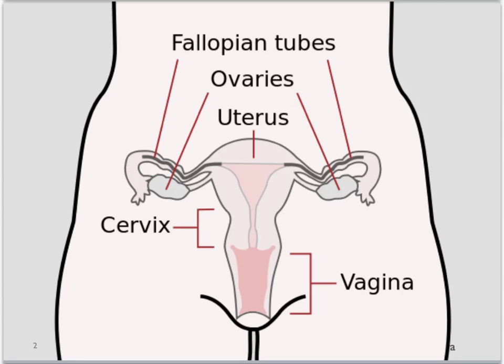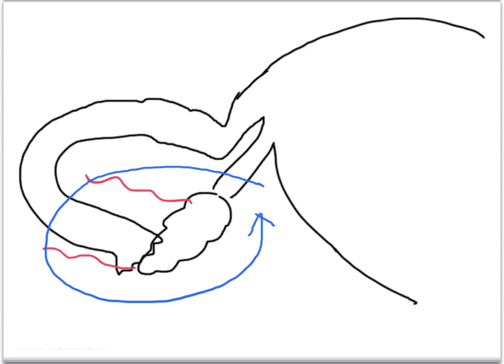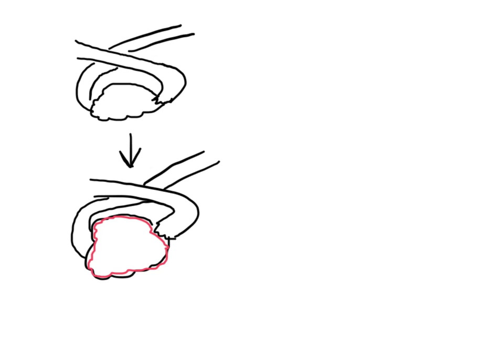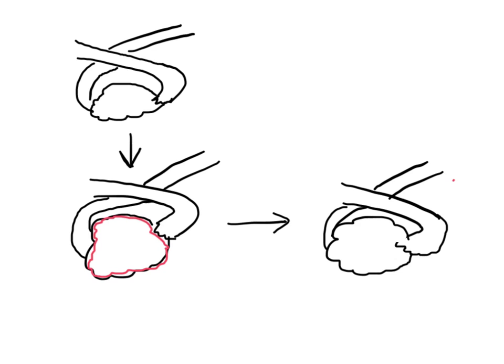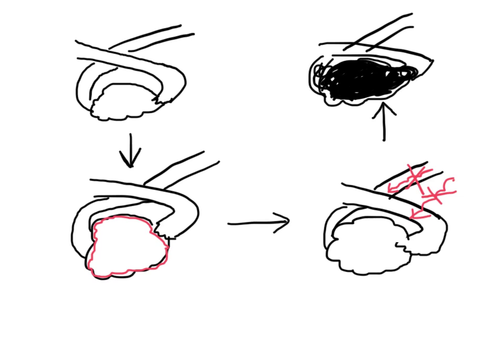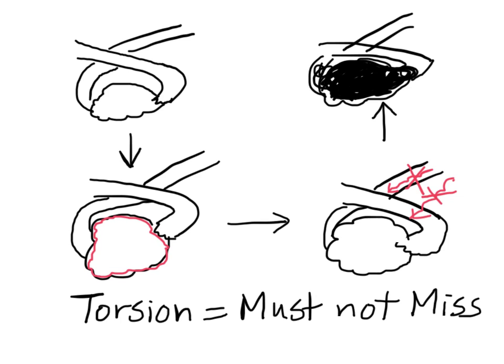Ovarian torsion occurs when the ovary and often the fallopian tubes together become twisted or torted around their vascular supply. From the torsion a few things happen from the vascular supply. First, the lack of venous outflow causes edema. That causes decreased arterial flow. Eventually that leads to ischemia and infarction. Therefore, in ovarian torsion it is an emergency and a must-not-miss diagnosis.